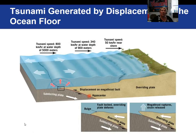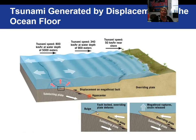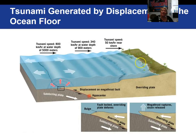Megathrust earthquakes are oftentimes responsible for large tsunamis. A subducting slab and the overriding plate become locked, causing a bulge and deformation of the plate, and when it snaps and breaks loose you get a megathrust earthquake. A tsunami can then be generated. Out in open water it travels at high speed with low amplitude, but when it nears land the speed decreases and the height of the wave increases, causing devastation.